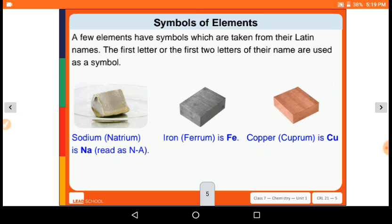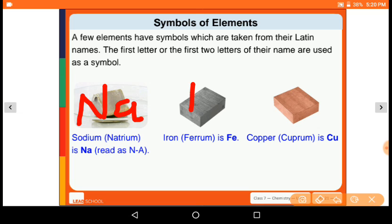A few elements have symbols which are taken from their Latin names. The first letter or first two letters of the name are used as symbols. Sodium's Latin name is natrium, so we can write sodium as capital N and small A. Next, iron's Latin name is ferrous, so we can write capital F and E. Copper is capital C and small U, it is the symbol of copper.